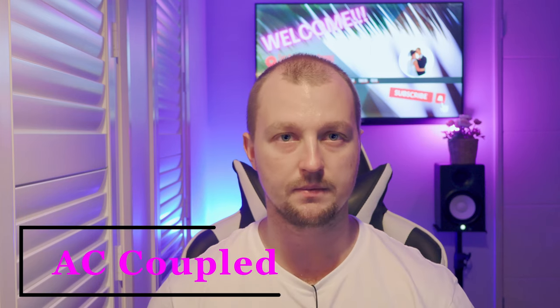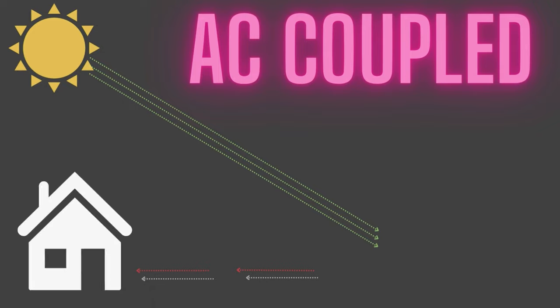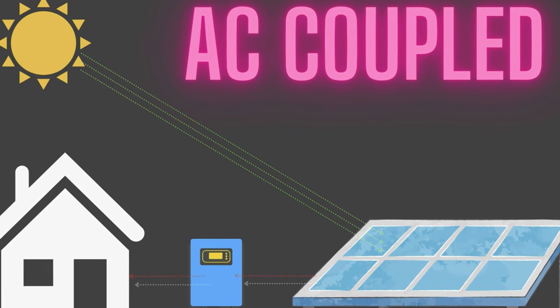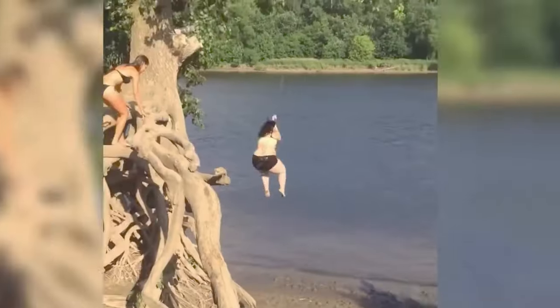First up, we've got AC coupled systems. Picture this: direct energy from your solar panels is channeled straight to an inverter, magically transforming it into usable electricity for your home. No batteries, no fuss. It's like a direct link from the sun to your sockets. Easy, right? But here's the catch — this setup only works when the sun is shining, and no storage means no night time power.